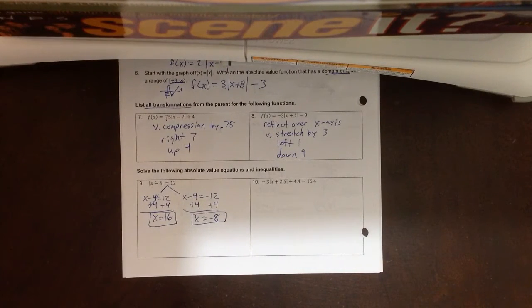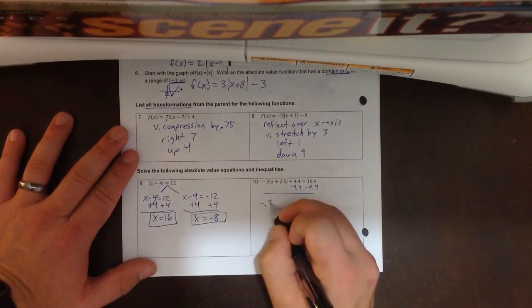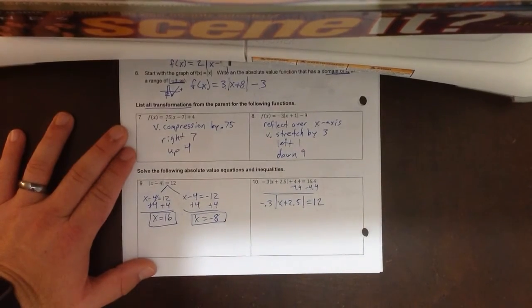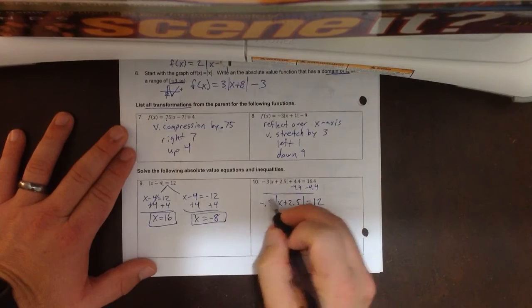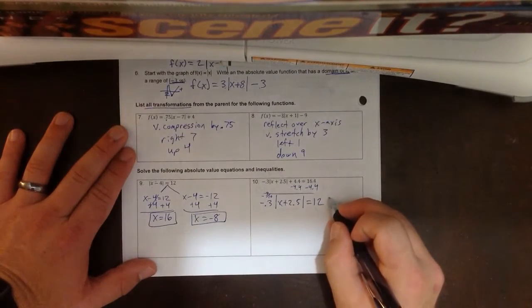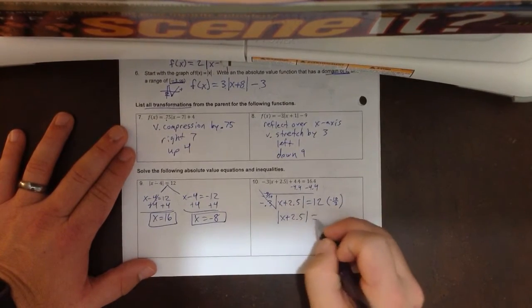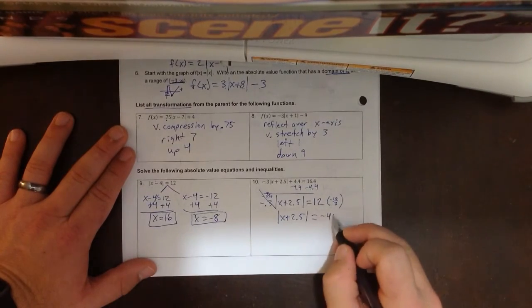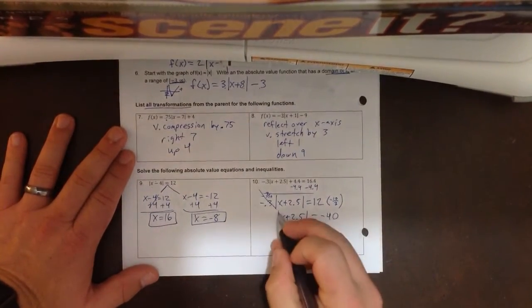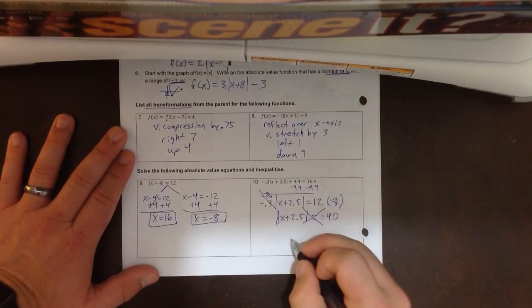Alright, on the next one, we're going to subtract 4.4 first because we need to isolate the absolute value. I'm going to change this to be negative 3 tenths. It's the same thing, negative 0.3. And so we're going to divide by negative 3 tenths, or we're going to multiply by negative 10 over 3. And so we'll get rid of that. Absolute value of x plus 2.5 is equal to, and this has to be negative 40. And again, you could use your calculator for this. Divide by negative 0.3. You should get the same thing. But now I'm going to stop because absolute value cannot be negative. Absolute value is always positive. And so this cannot happen. It's no solution.